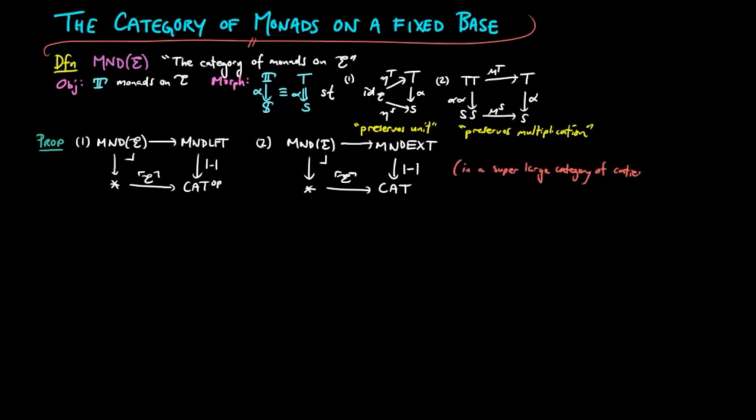Of course, to take an actual pullback would require an ambient super-large metacategory boldface Cat, which contains the metacategory of categories, to make this precise. But the point really is that monad morphisms are the same as lifts or extensions of the identity functor on E.